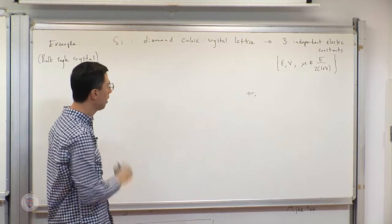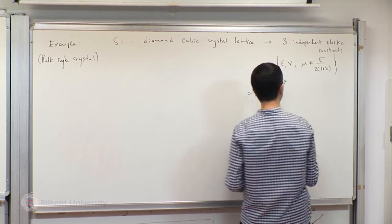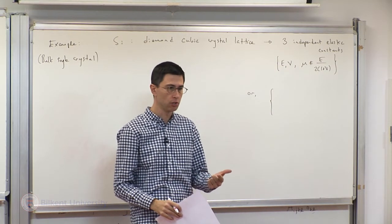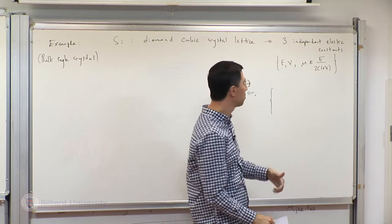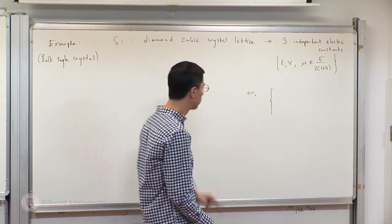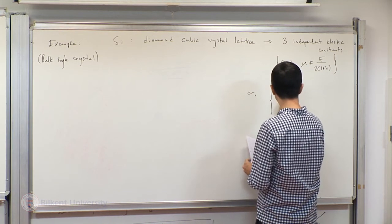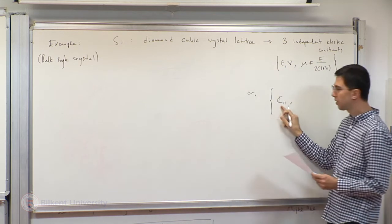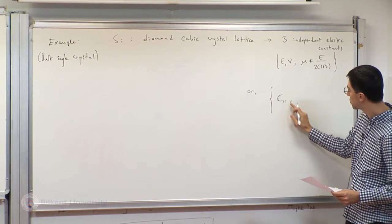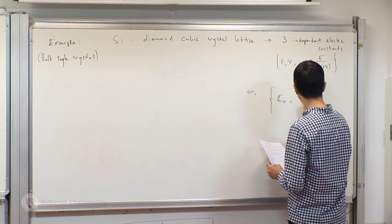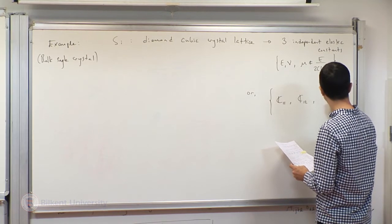Instead of those three constants, we can pick any three. For this example, let's pick the three constants that appear in the Voigt 6×6 notation of the stiffness tensor: C11, C12, and C44. They have to be the linearly independent ones.